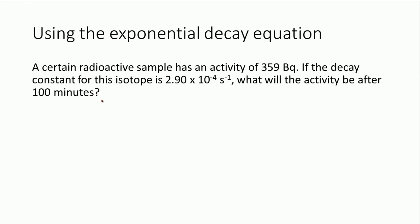Here's a question that asks us to use this equation. A certain radioactive sample has an activity of 359 becquerels — so this is A-naught, the initial activity. Becquerels is the same as seconds to the minus one. If the decay constant for this isotope is 2.9 times 10 to the minus 4 per second, what will the activity be after 100 minutes? First, let's get our units consistent: the 100 minutes needs to be changed into seconds, so that's 6,000 seconds.